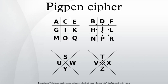When enciphered, the location of the dot in each symbol would indicate which letter in that pen was represented.